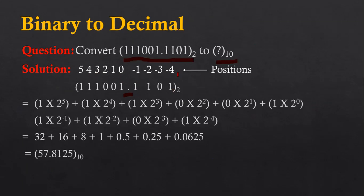If there are more digits, we can extend these position values as minus 5, minus 6, and so on. For the leftmost digit, which is 1, it is multiplied by 2 raised to 5. Here 2 is the base and 5 is the position value. So 1 is multiplied by 2 raised to 5 to find its outcome. Similarly, other values are multiplied accordingly.